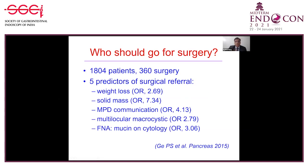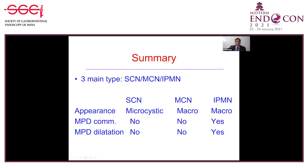Who should go for surgery? In a series of 1800 patients where 360 underwent surgery, five predictors of surgical referral were identified: weight loss, solid mass within the cystic tumor, communication with the main pancreatic duct, multi-locular macrocystic lesions, and mucinous cytology. Patients with larger multi-locular lesions, dilated main pancreatic duct, or solid mural nodules within the cystic neoplasm are those who would require surgery.